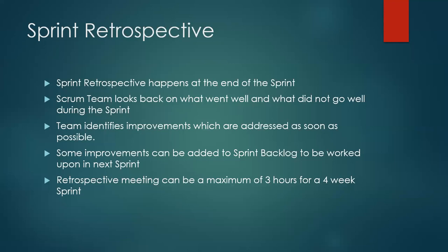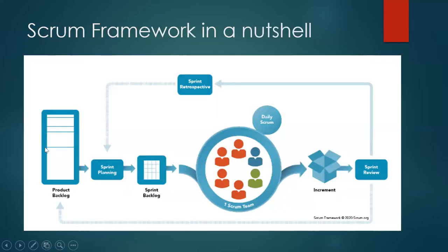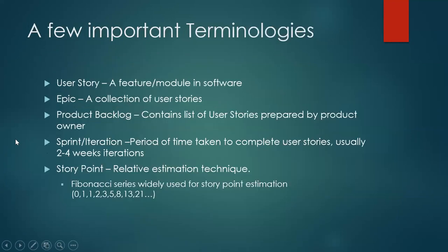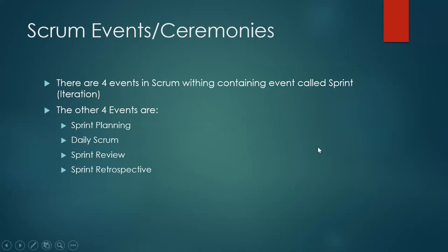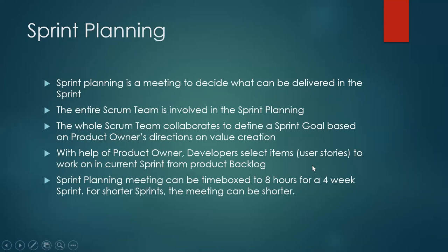To summarize the Scrum events: within the Sprint — which is the iteration — we do Sprint planning, Daily Scrum, Sprint Review, and Sprint Retrospective. Together they are called Scrum events or ceremonies. At the end of all this, what we give to the customer is an increment. Then again we start with Sprint planning, Daily Scrum, Review, and Retrospective — this goes on in a cyclic manner from Sprint to Sprint in Agile.